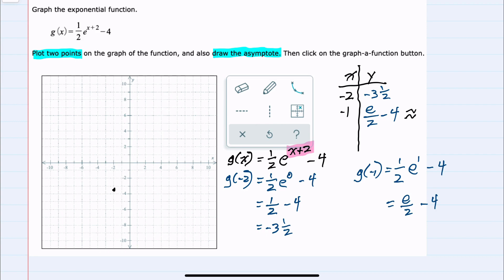2.72 divided by 2 is 1.36 minus 4 is negative 2.64, so it's approximately negative 2.64 when x is negative one. We can see that this is going up.